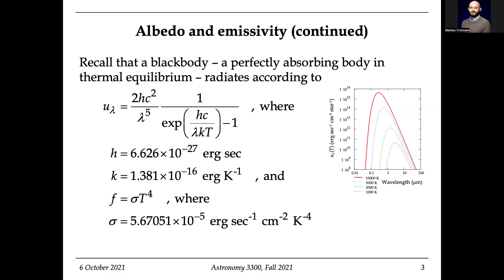Before the photoelectric effect, light was a wave, not a particle. Light is both a wave and a particle — it's just not stuff we ever observed before. When you apply the photoelectric effect, it tells you that actually this curve turns over, and this is the Planck function.